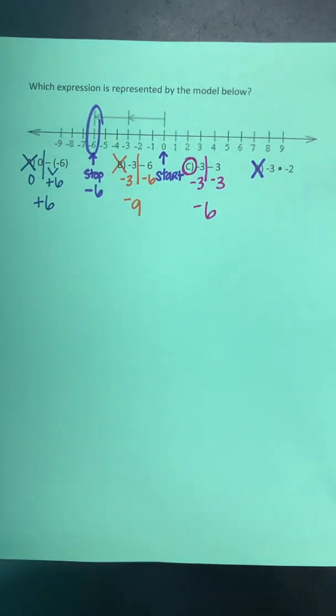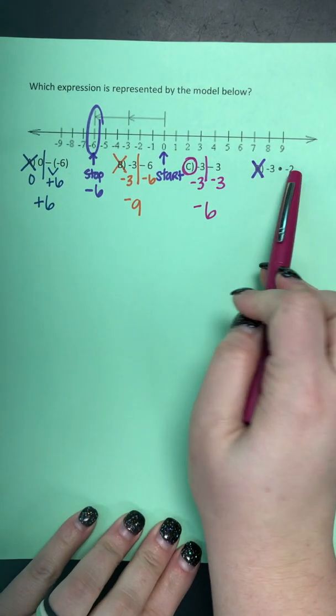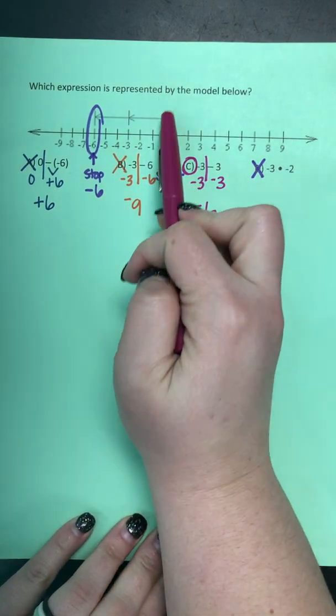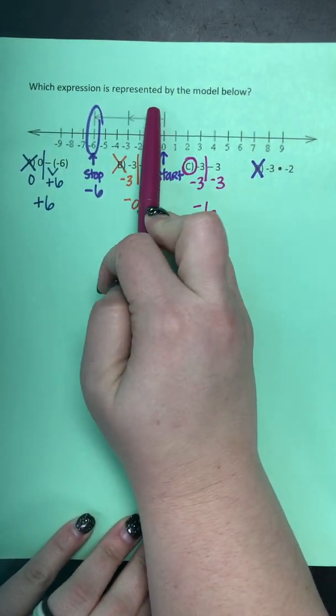So just remember, you need to always pay attention. Use your integer rules. And then you can always eliminate if this is multiplication, because there were no hops. They were straight arrowed lines.